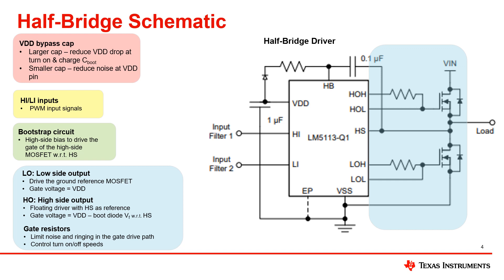Moving on, we now have the outputs. For a half-bridge schematic, there will generally be two FETs, one on the high side and one on the low side. The low-side output drives the ground reference FET, whose gate voltage will be equal to VDD. The high-side output is a floating driver with HS as a reference. The gate voltage for this FET will be equal to VDD minus the bootstrap diode's forward voltage drop with respect to HS. The resistors at the outputs are there to control the switch-on and switch-off speeds, as well as to help limit noise and reduce ringing in the gate drive path.